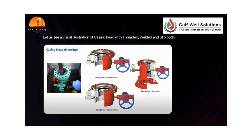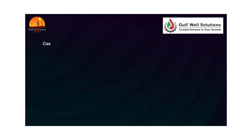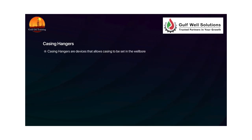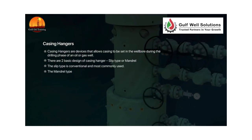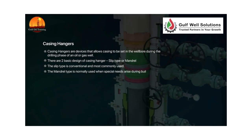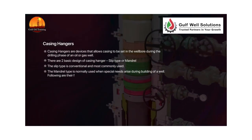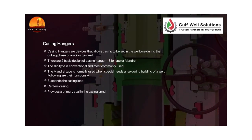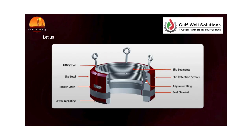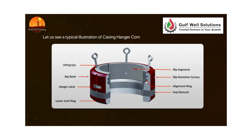Casing hangers are devices that allow casing to be set in the wellboard during the drilling phase of an oil or gas well. There are two basic designs: slip type and mandrel. The slip type is conventional and most commonly used, while the mandrel type is used when special needs arise. Their functions include suspending the casing load, centering the casing, providing a primary seal in the casing annulus, and allowing for testing of connections.